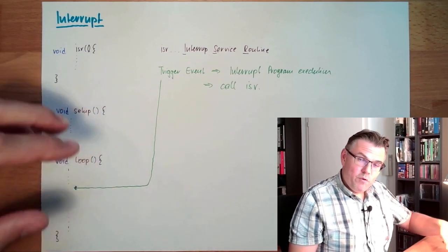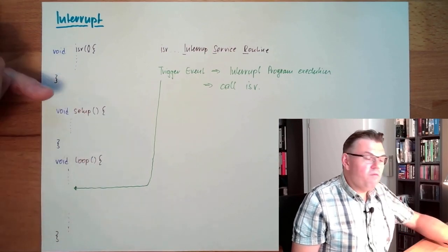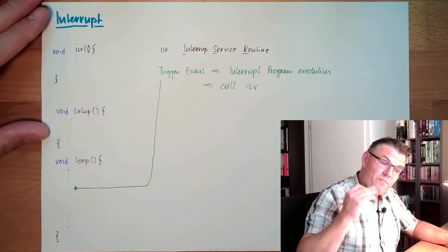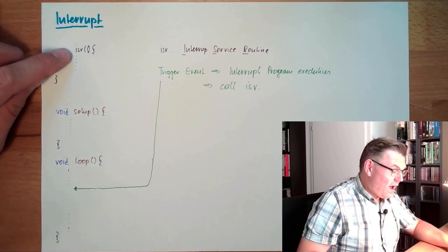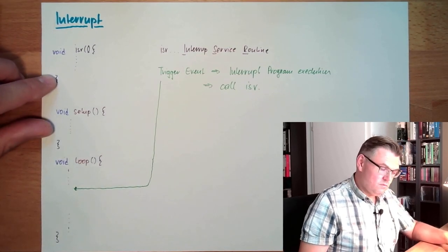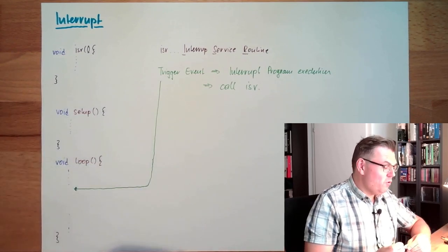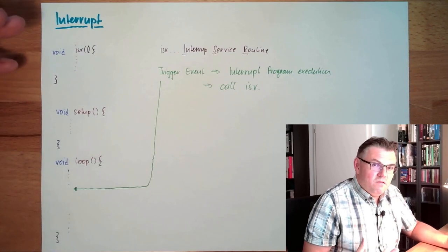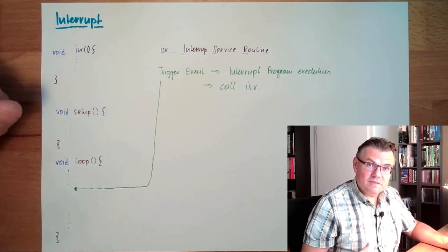Wherever we are in our code, does not really matter if we are in loop, if we are in setup, if we are in some user-programmed function or something like this. The program execution is interrupted and the ISR is executed. If we are reacting in this ISR pretty fast, immediately after something has changed.